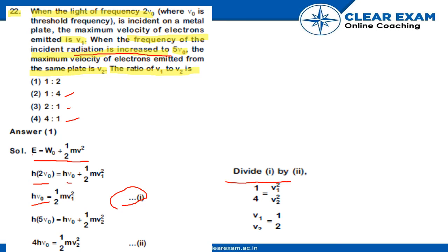So, when we divide equation 1 by equation 2, 1 upon 4, we have hv0 equal to half mv1 square, and this will be half mv2 square.